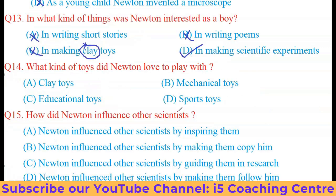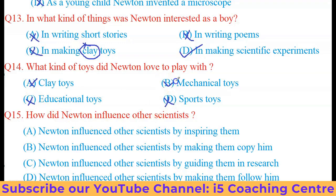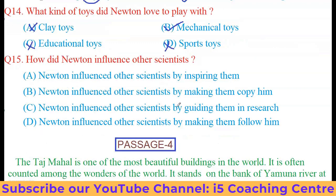Question 14: What kind of toys did Newton love to play with? Option A — clay toys: wrong. Option B — mechanical toys. Option C — educational toys: not referred to. Option D — sports toys: not referred to. Using the deletion method, option B — mechanical toys — is correct. He loved to play with mechanical toys.